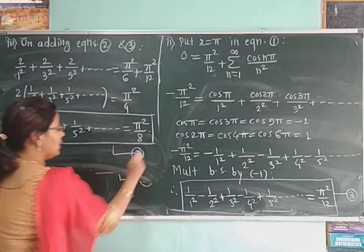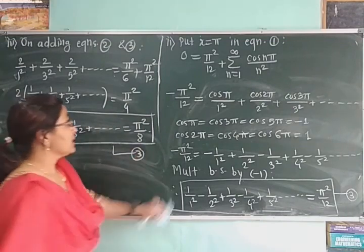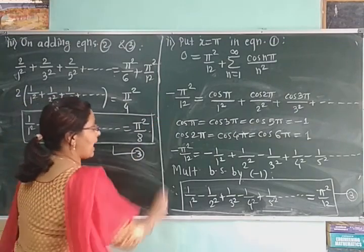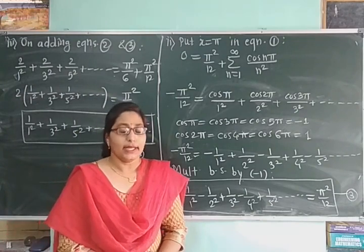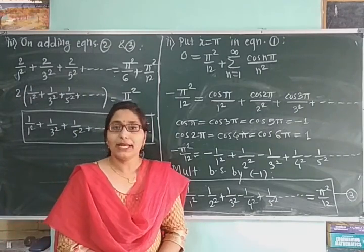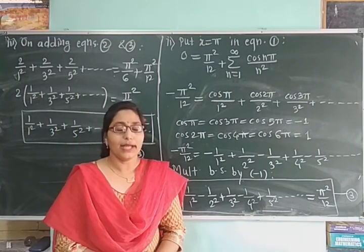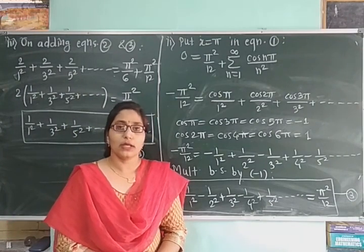In this way, we have first obtained the required Fourier series, and then by substituting suitable values of x, we have obtained the three required deductions.